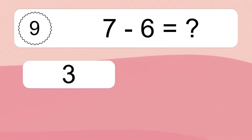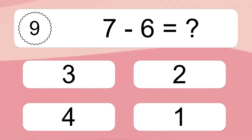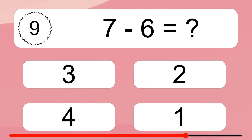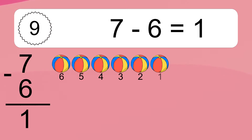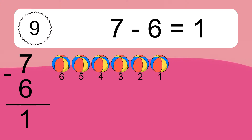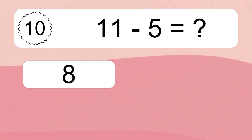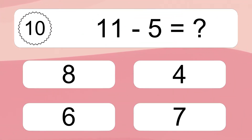7 minus 6 equals what? 7 minus 6 equals 1. Let's count it: 6, 5, 4, 3, 2, 1.